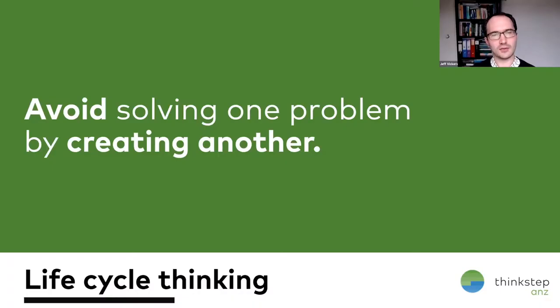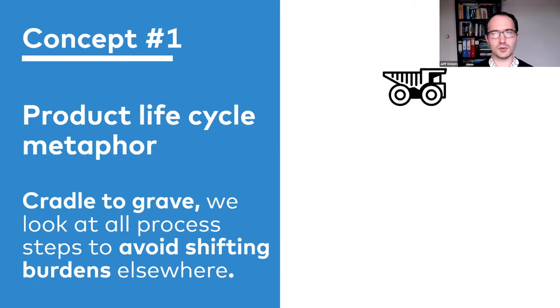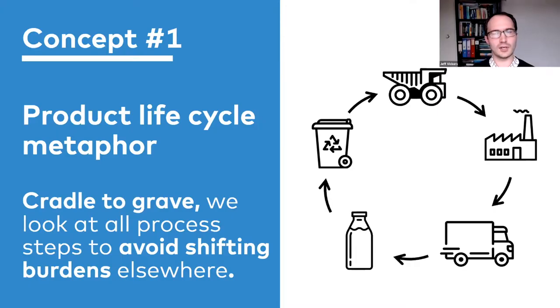I'll do a five to ten minute refresher on life cycle thinking before we dive into the Garbi Packaging Calculator. The goal of life cycle thinking is really to avoid solving one problem by creating another. I want to introduce the concept by looking at three ideas. The first is the product life cycle metaphor — where you take raw materials out of the ground, manufacture them into something useful, transport that to the customer, they use it, and then make a choice to dispose of it.